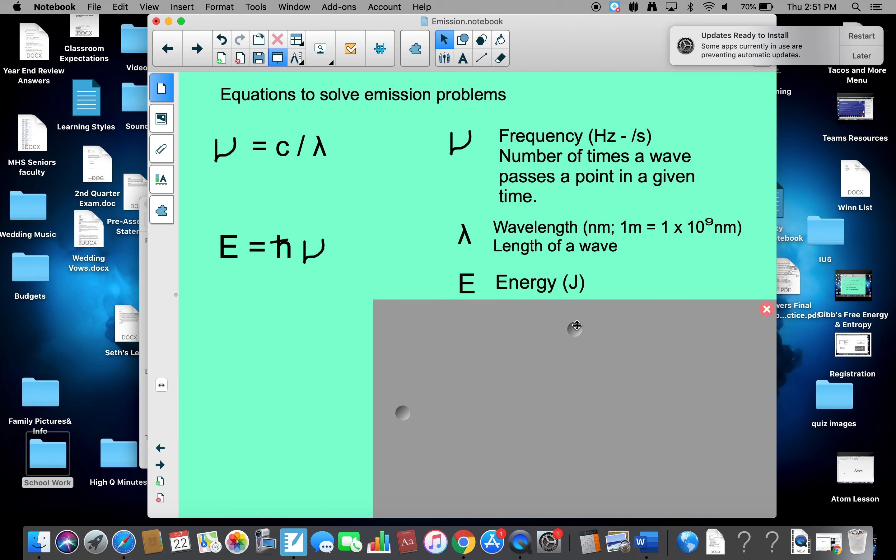E, in the other equation, is energy, and it's in joules. That H with a hat is called Planck's constant. It stands for 6.63 times 10 to the minus 34 joule seconds. C is the speed of light in a vacuum, 3 times 10 to the eighth meters per second. And that's all our values for there.